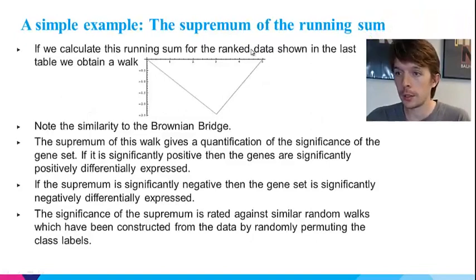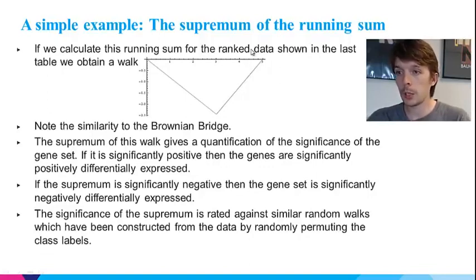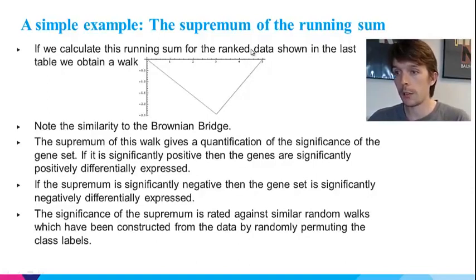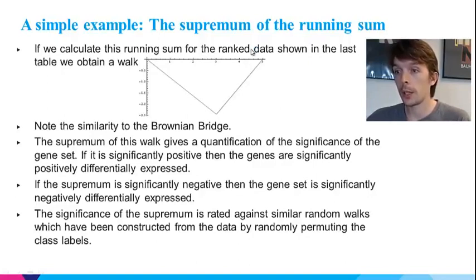If we go back to our ranked gene list for our example data and perform this walk, we see what is shown in the figure here. If the genes are collectively up-regulated, we would expect them to be mostly near the top of the list. When we do our walk, we will preferentially hit genes which are in our set, and our walk will make lots of steps to the right early on, straying very far from zero. If the genes in our test set are collectively down-regulated, we would expect to make lots of steps to the left before recovering back to zero. If our gene set is not collectively differentially expressed at all, we would expect our walk to be like a Brownian bridge, not straying very far from zero. We take the maximum distance from zero to be a measure of the collective differential expression of the gene set — this is often referred to as the enrichment score.